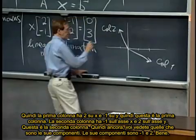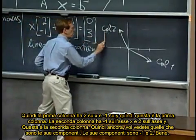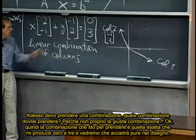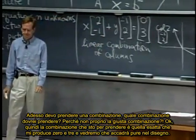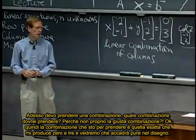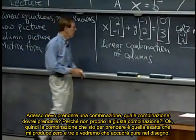So this, again, you see what its components are. Its components are minus one, two. Good. That's this guy. Now, I have to take a combination. What combination shall I take? Why not the right combination?